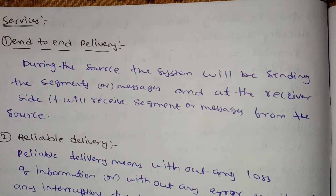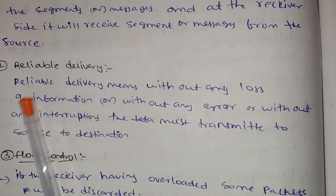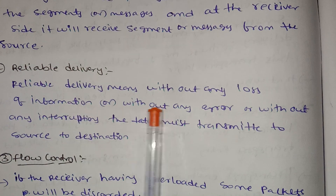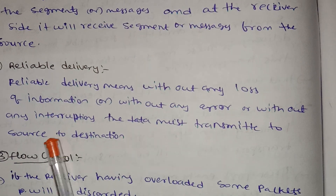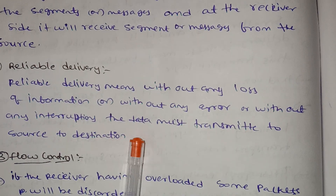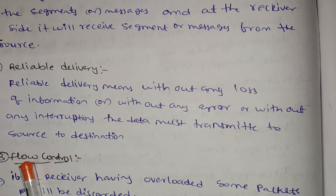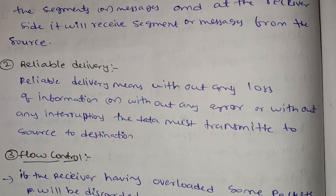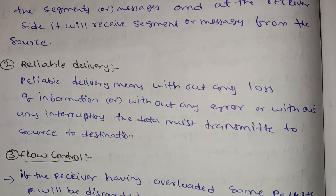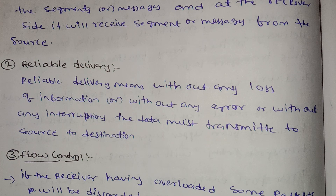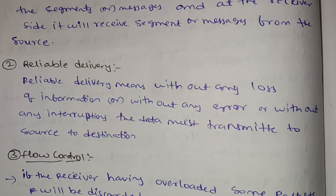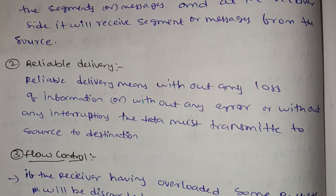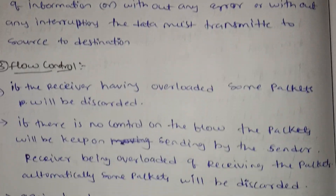The second service is reliable delivery, which means without any errors or interruption, the data must be transmitted from source to destination. If data is lost or there are errors or interruptions, it will be handled.